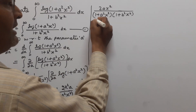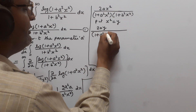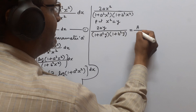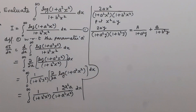For the partial fraction, let x² = y. So we write 2ay divided by (1 + a²y)(1 + b²y) as A/(1 + a²y) plus B/(1 + b²y), where capital A and capital B are both unknown constants. Taking LCM on the right-hand side, we get 2ay = A(1 + b²y) + B(1 + a²y).